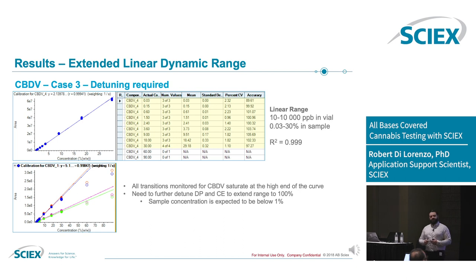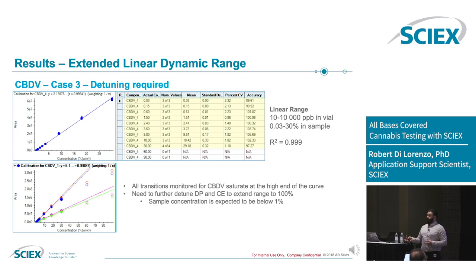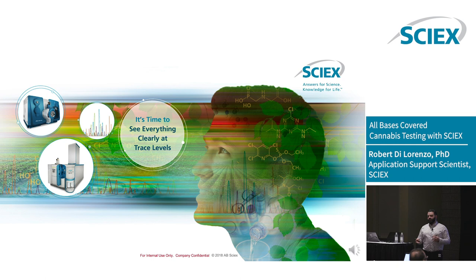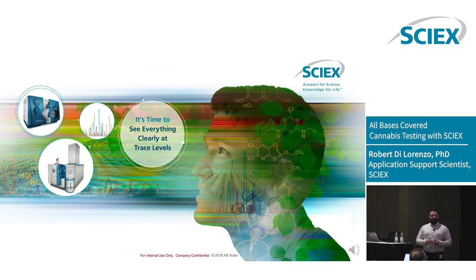THC, CBD, and in particular CBC are all isomeric, and they fragment nearly identically — all their transitions are the same, their product ion spectra are the same. So we can't tighten up the chromatography; we need to separate them. But there is another way: we were able to separate these using differential ion mobility.